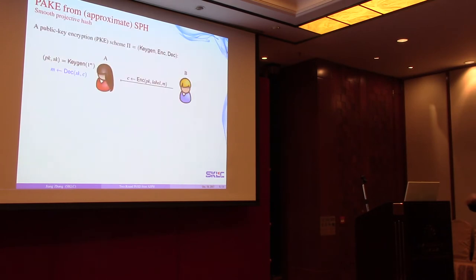We begin with the definition of a PKE scheme. Our PKE scheme has three algorithms: key generation, encryption, and decryption. One can use key generation to generate a pair of public key and secret key. Using the public key, we can produce the ciphertext of any given message. The decryption algorithm can be used to recover the message from the ciphertext.